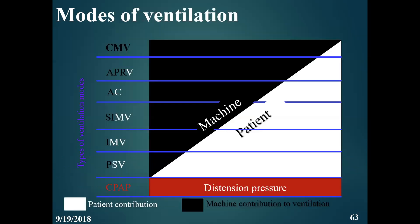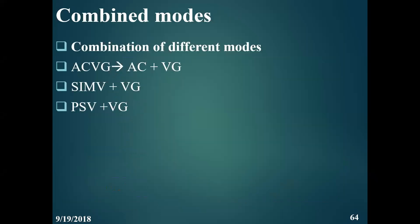This also helps you understand patient versus machine contribution — the black color represents patient contribution. In controlled mandatory ventilation, it is all by the machine. In APRV, there is more contribution from the patient. Assisted control is mainly the machine with some patient contribution. SIMV is almost 50-50. IMV is mostly by the patient, and PSV is almost always delivered by the patient. Sometimes we can combine modes — for example ACVG, assisted control volume guarantee, which controls both pressure and volume — this is called pressure-limited volume control. We can also combine PSV with volume guarantee, which they call physiological ventilation: pressure support guided by the patient, flow cycled, pressure limited, with volume guarantee.